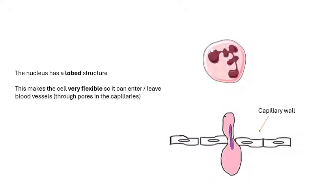Looking at the structure of this cell, the nucleus has a lobed structure — it's not a single blob in the middle but all these blobby bits joined together. That lobed structure helps make the cell very flexible, because it needs to enter and leave blood vessels. To get to the tissue, it has to squeeze through pores in the capillary wall, which is a squamous endothelial tissue, so the cell needs to be very flexible to change shape.